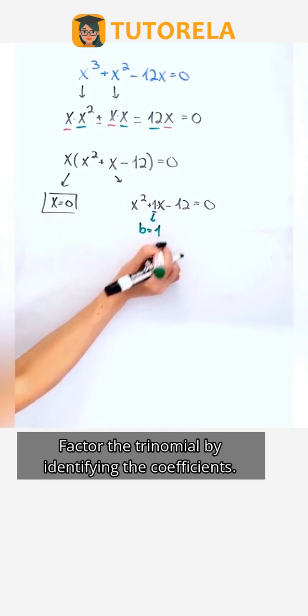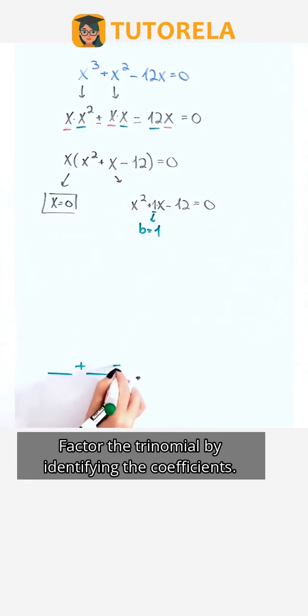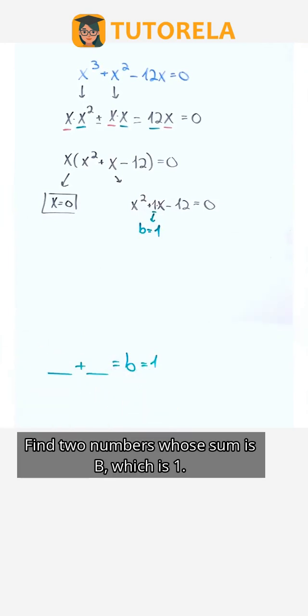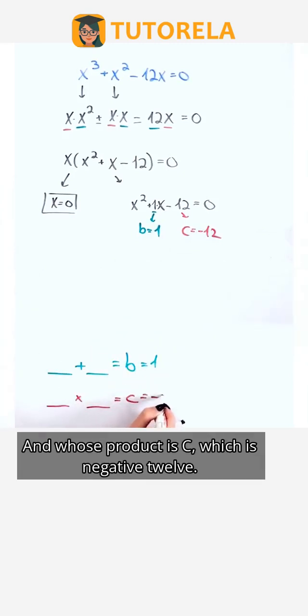Factor the trinomial by identifying the coefficients. Find two numbers whose sum is b, which is 1, and whose product is c, which is negative 12.